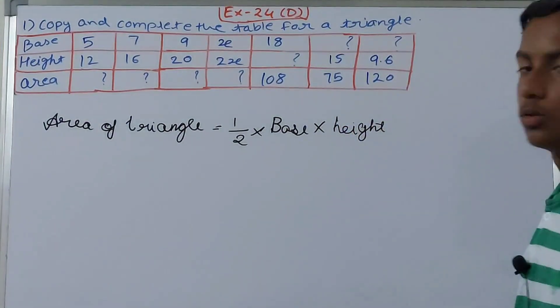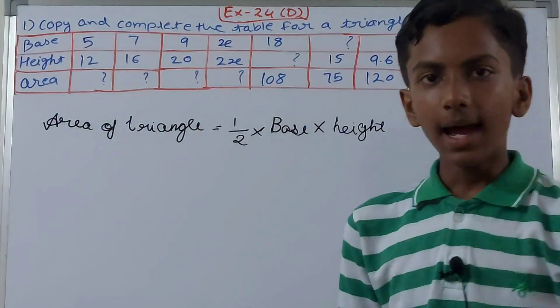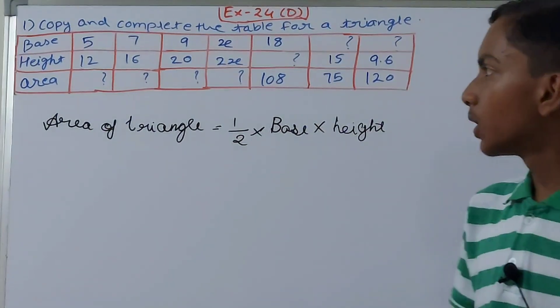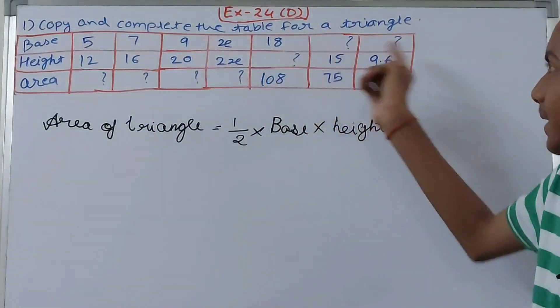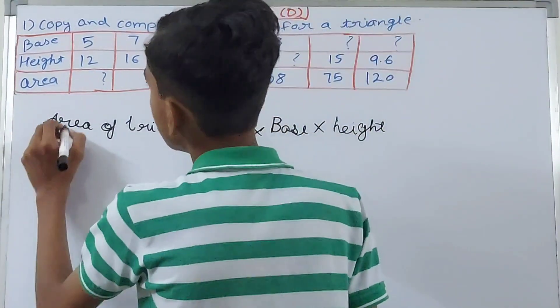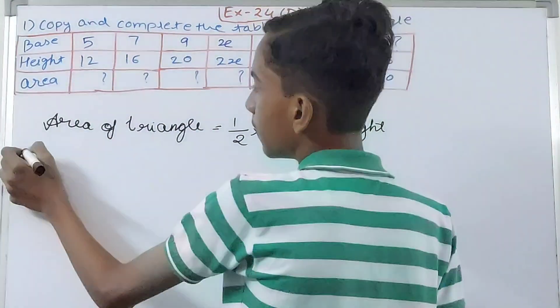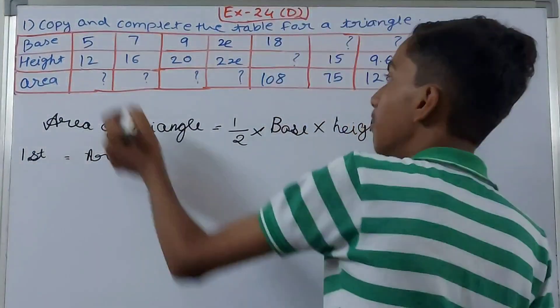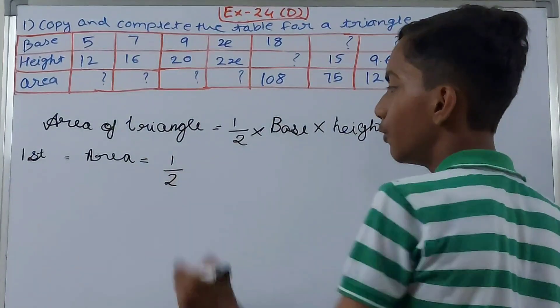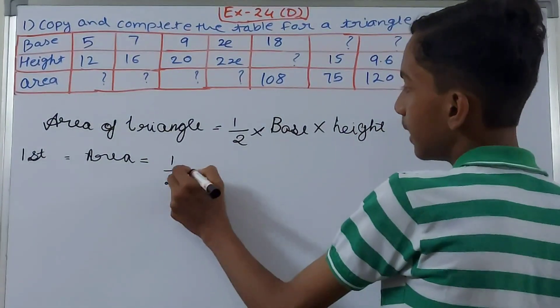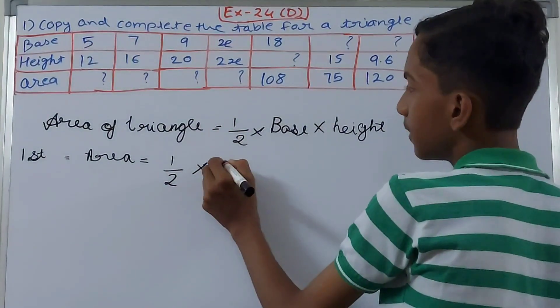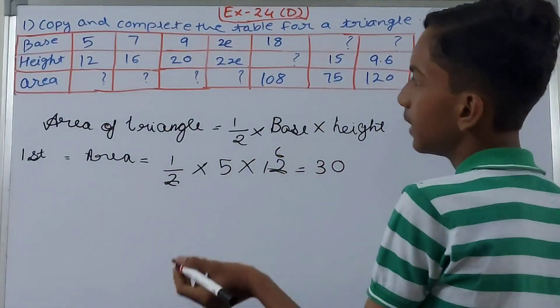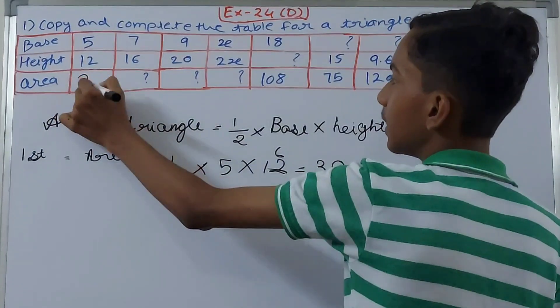Base and height are given, and 1/2 is a fixed value. Using this we'll calculate the area. For the first one, area equals 1/2 into base 5 into height 12. Cancel this, so 30. The area becomes 30. No unit is given so we will not put any unit in our answer.